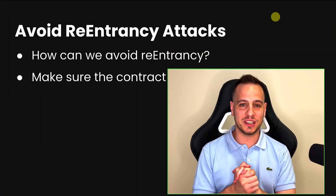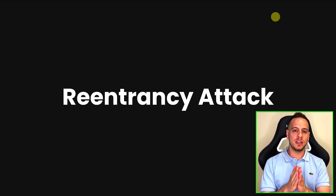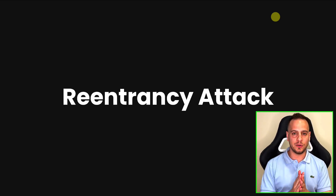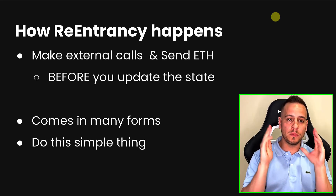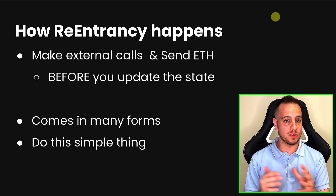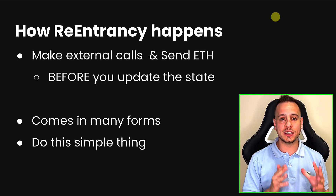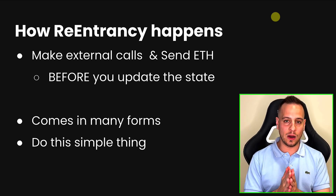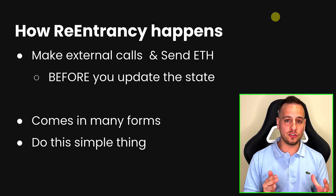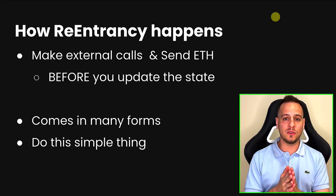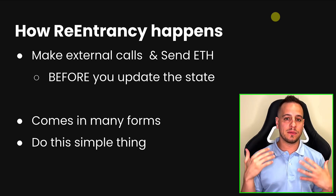Before I teach you how to avoid re-entrancy attacks and make sure that your smart contracts are secure, first we need to understand what re-entrancy attacks are. Re-entrancy attacks can happen anytime you make an external call from your smart contract to another address or account. It could be a smart contract or an EOA account. It happens when you make an external call or send ETH to another account or contract, because once you send ETH to another account it can trigger a fallback function.